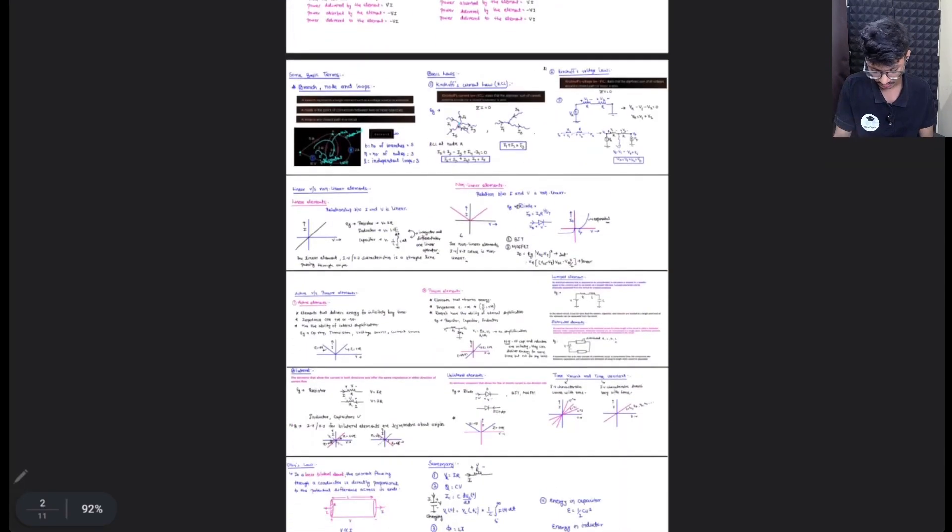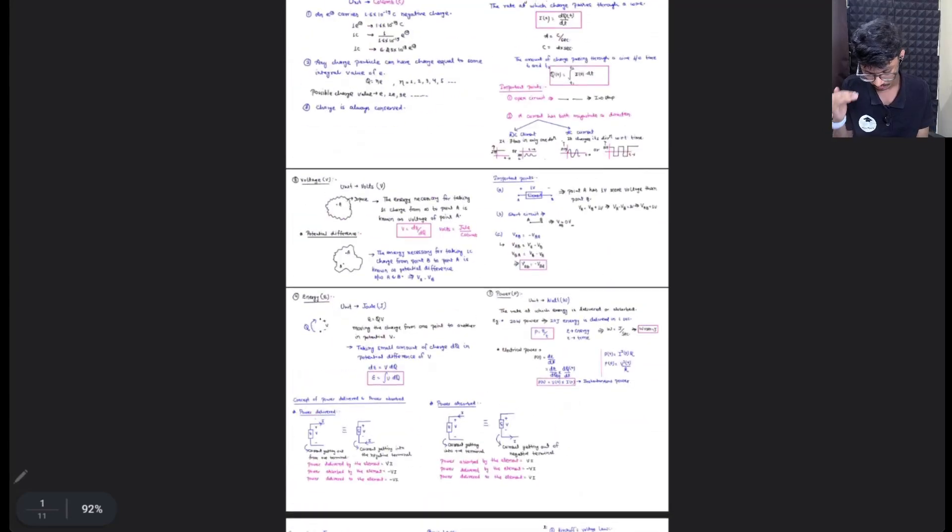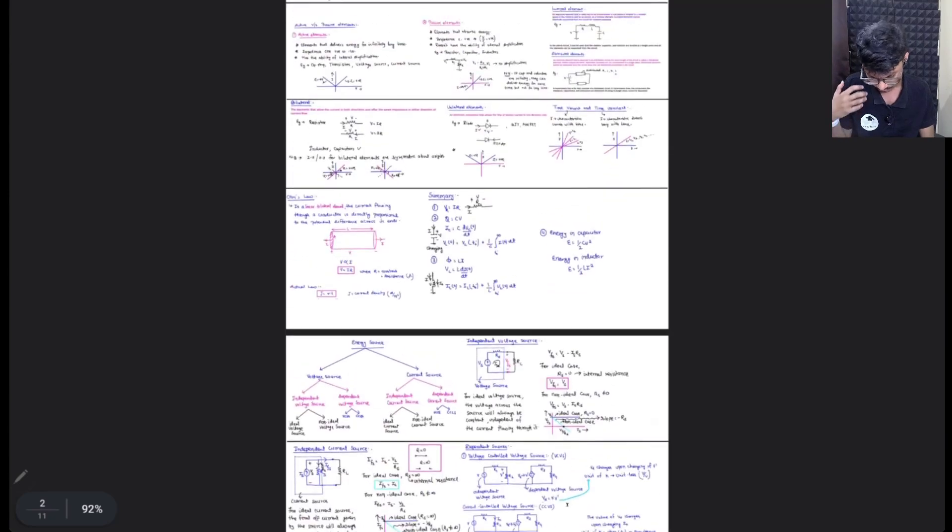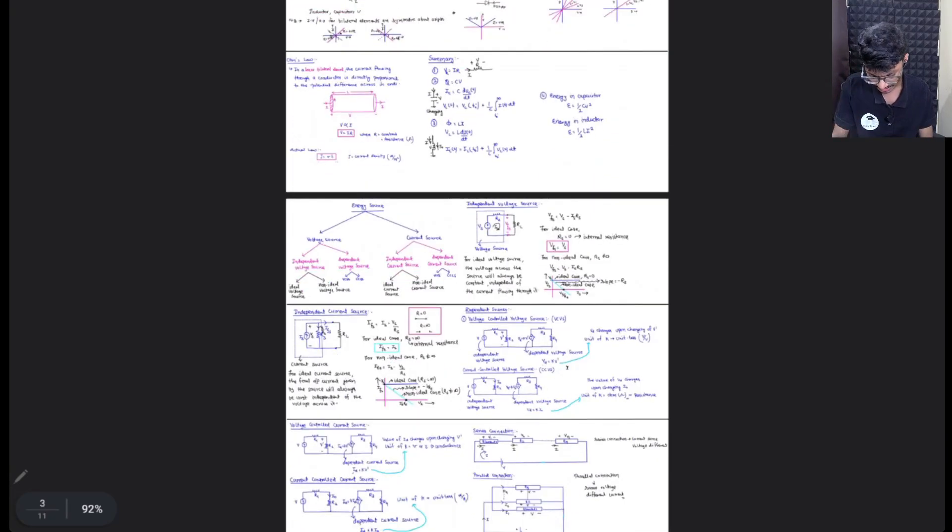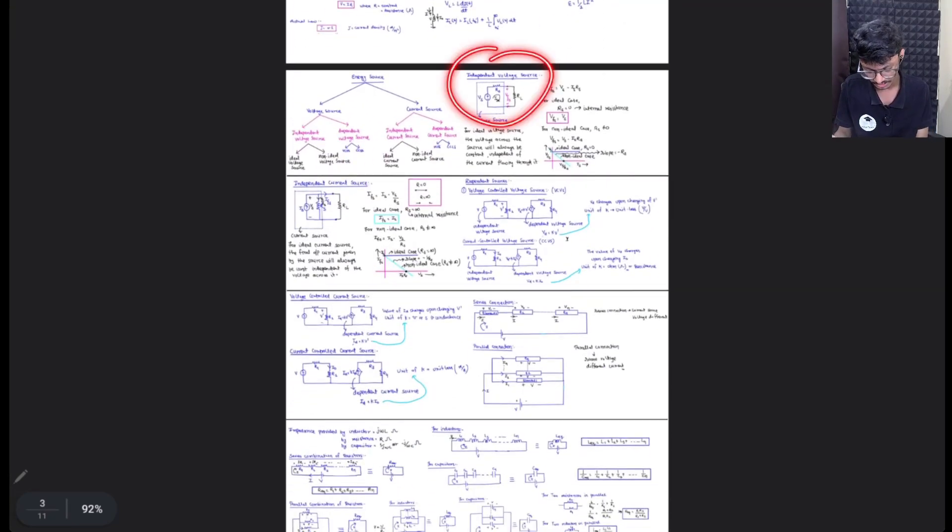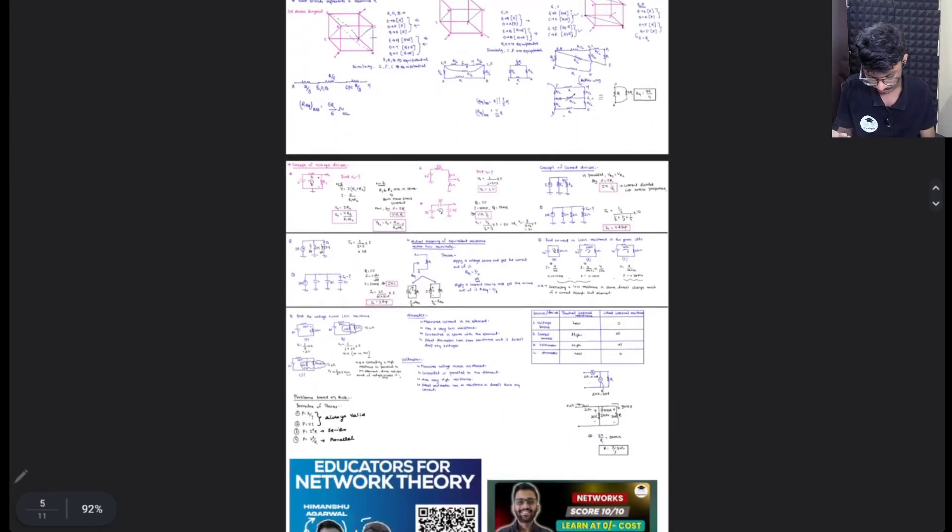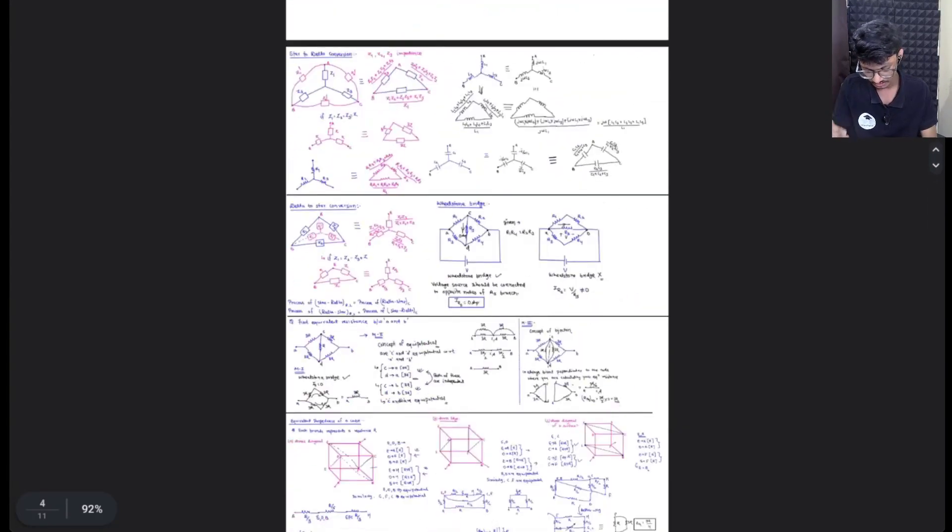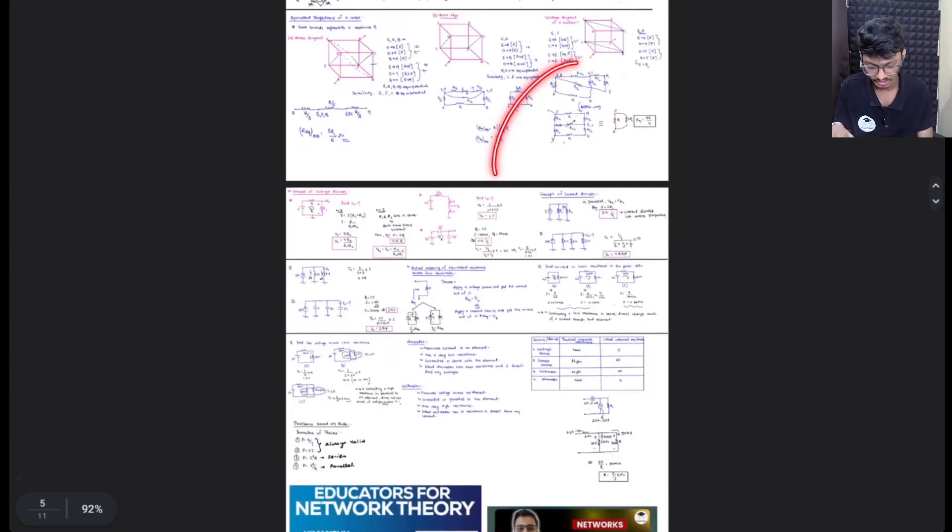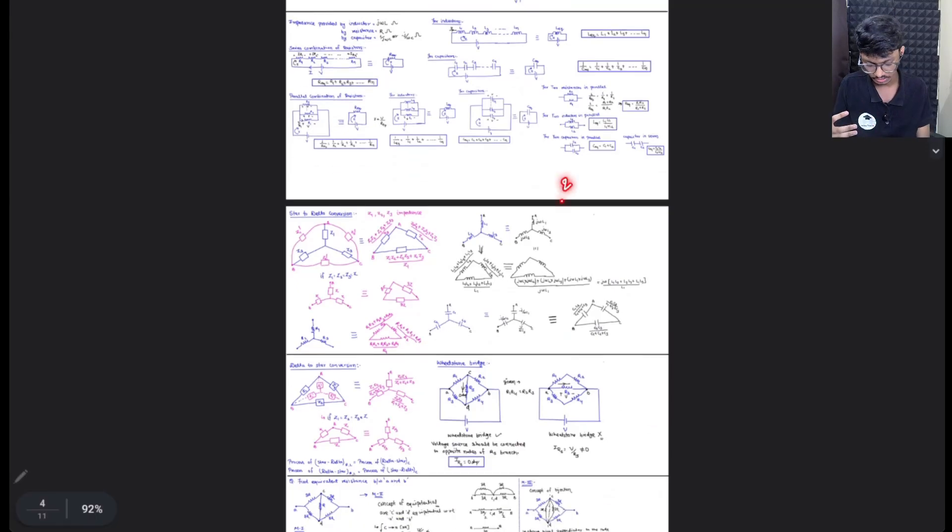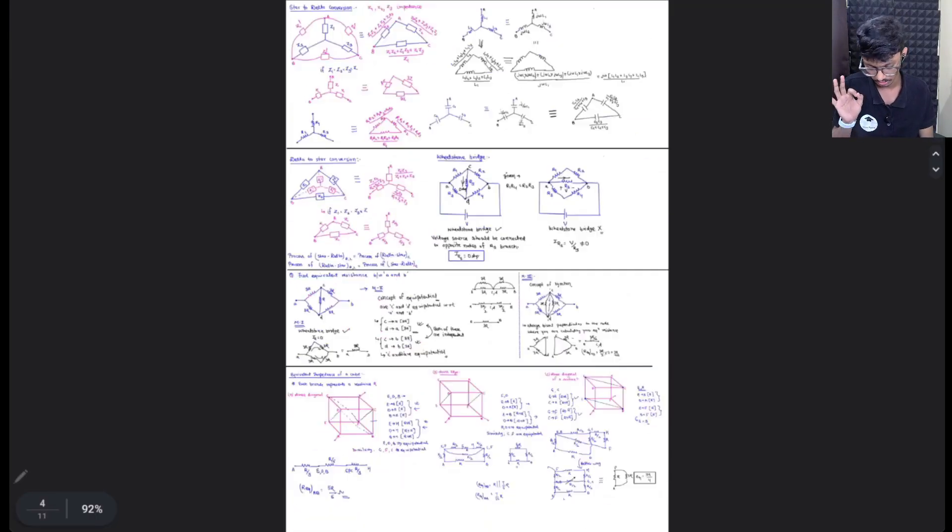So there we have covered every single thing: charge, voltage, energy, power, linear networks, non-linear networks, bilateral networks, every single topic. Independent voltage source, current source, whatever you can think of, every single one of them has been covered. So this was the first chapter. First chapter was mid-lengthy, that's why it took us four and a half pages. Each of them are basically A4 size, so you can take the printout. Then you can also write or scribble your own stuff.